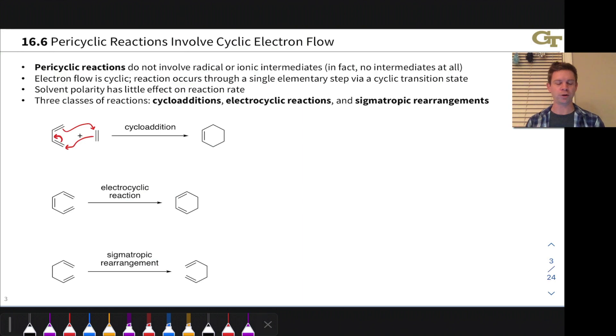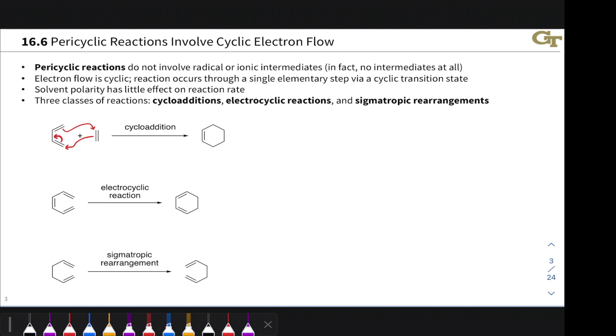In an electrocyclic reaction, electrons move around in a circle around a contiguous pi system. Here it's a six-atom conjugated triene to form a ring. In the forward direction as drawn here, this is known as electrocyclic ring closing since the ring closes.